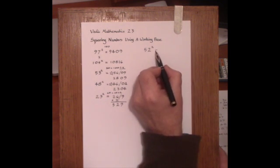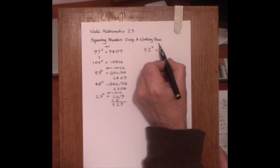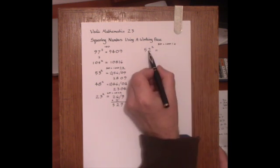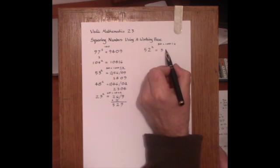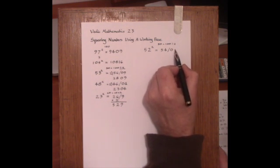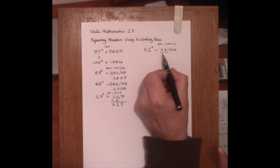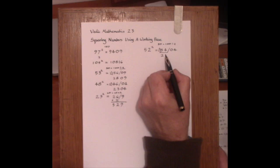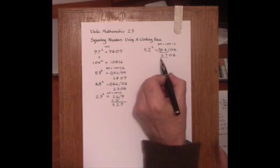And the method by the method I've just shown, using 100 as the real base, so 50 is 100 divided by 2, we add on the surplus to 52 making 54, and then set up the square of 2 is 04, and then divide the 54 here by 2. 2 into 54 goes 27.